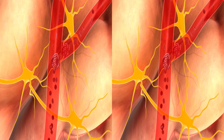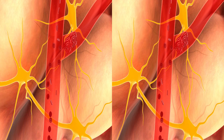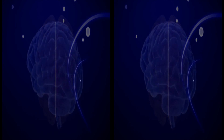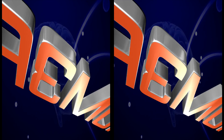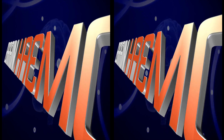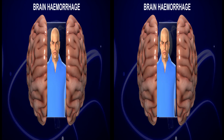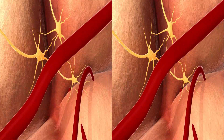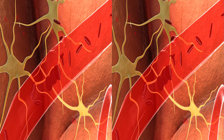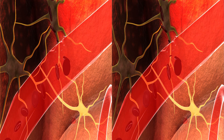An embolus is a portion of a thrombus, or clot, that becomes detached and enters the circulating blood, blocking circulation. Brain hemorrhage is a type of stroke that occurs when an artery bursts in the brain, causing localized bleeding in the surrounding tissues.